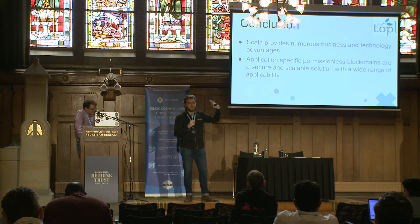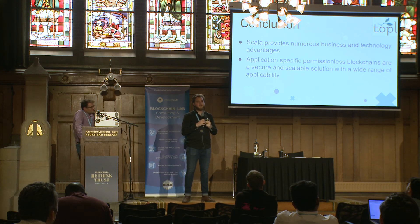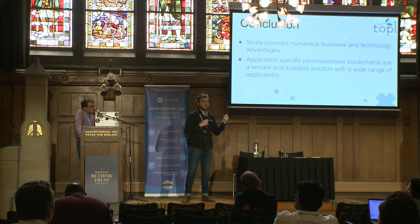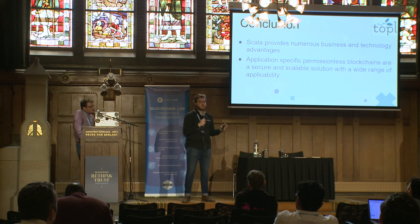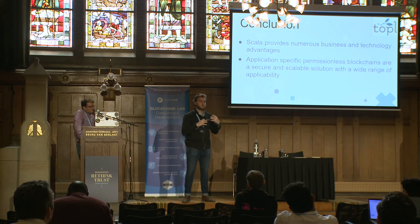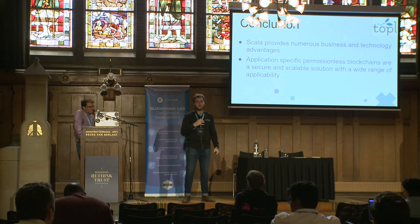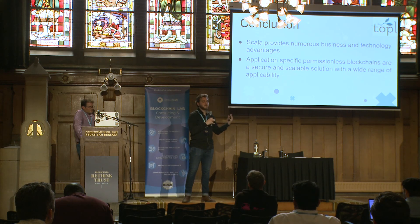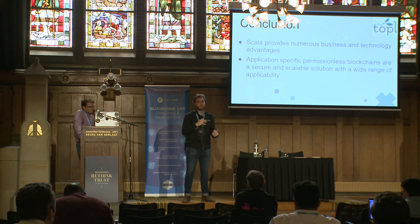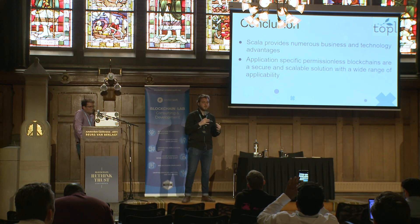In conclusion, Scala provides numerous business and technology advantages to blockchain specifically due to the way its fundamental architecture and functional programming allows. Application-specific permissionless blockchains are a secure and scalable solution with a wide range of applicability. That was one very basic use case of a simple contract written in JavaScript. The idea is you can build out an entire functional parser that you can run very specific behaviors through to create specific types of contracts — not just Ethereum-type smart contracts that are a general computer, but non-Turing-complete contracts that only have one specific use case applicable at a business logic level.